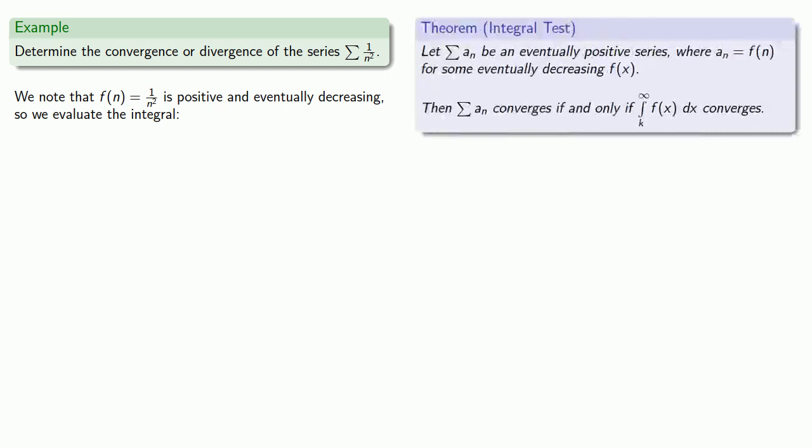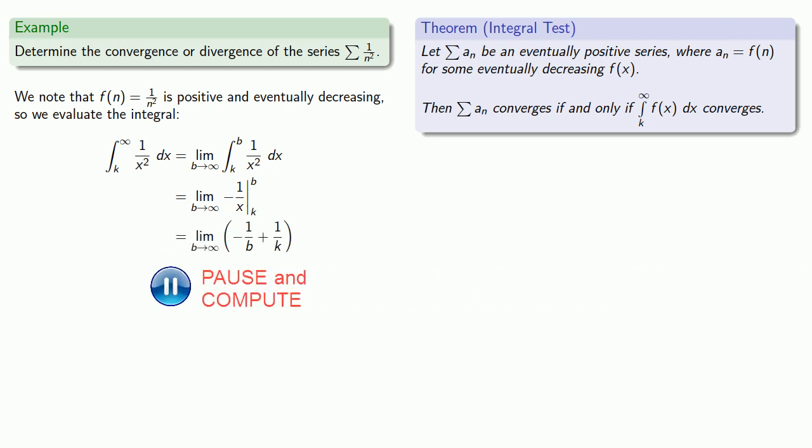So, we'll evaluate our integral from some place to infinity of 1 over x squared dx. Since that's an improper integral, we have to rephrase this as a limit. We'll find the antiderivative. We'll evaluate it. We'll take the limit. And, since the integral converges, 1 over k is a finite value, then our series also converges.